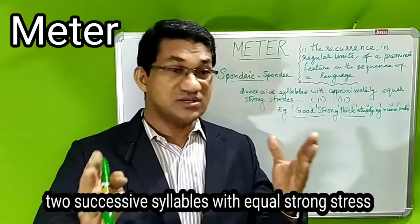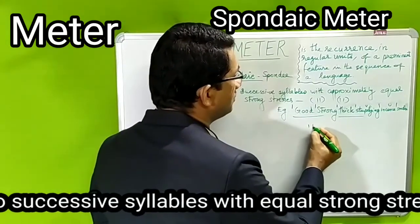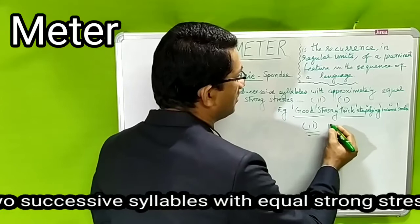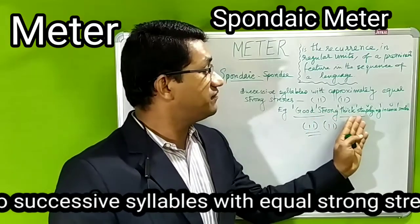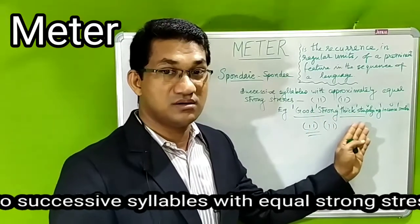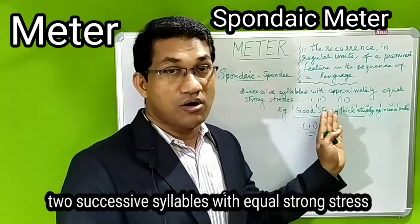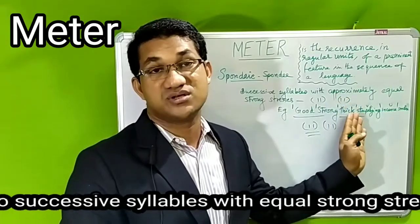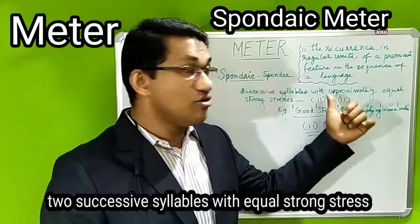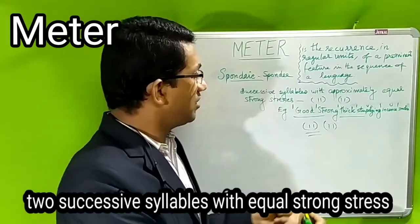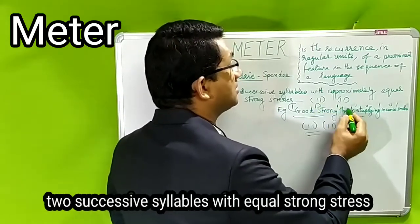So what is spondaic meter? Spondaic meter is a meter in which you have the occurrence of two stressed syllables — a stressed syllable followed by another stressed syllable. Look at this line: 'Good, strong, thick, stupefying incense smoke.' Here 'good' is stressed, 'strong' is stressed — that is one spondee. 'Thick' is stressed, 'stupefying' is stressed — that is another spondee.